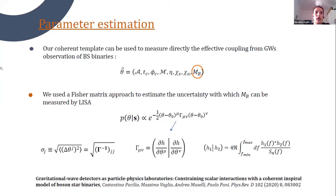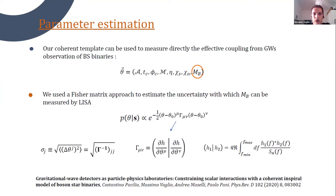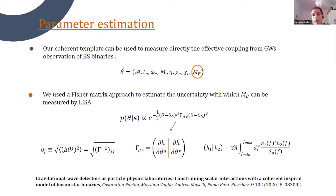The idea was to study the ability of LISA and in general future detectors to measure directly the effective coupling of the underlying scalar theory from observations of a boson star binary. We used a Fisher matrix approach, which holds in the limit of large SNR. In this limit, the posterior is centered on the true values of the parameters, and the uncertainty is simply given by the diagonal elements of the inverse of the Fisher matrix.